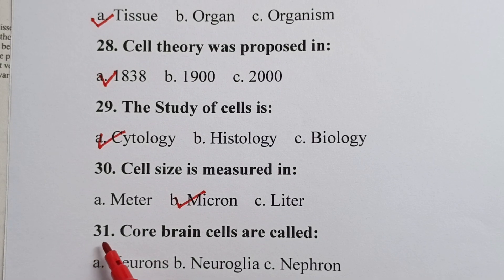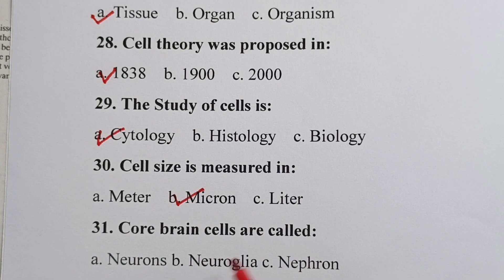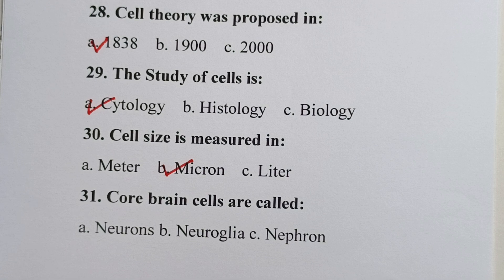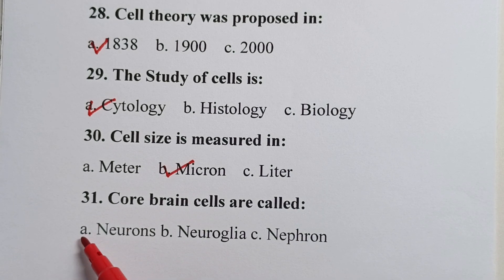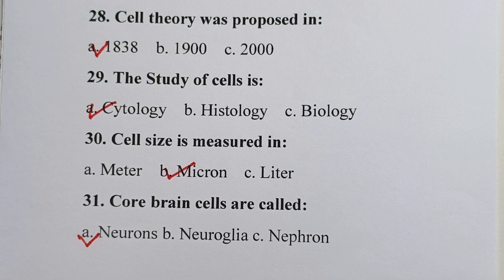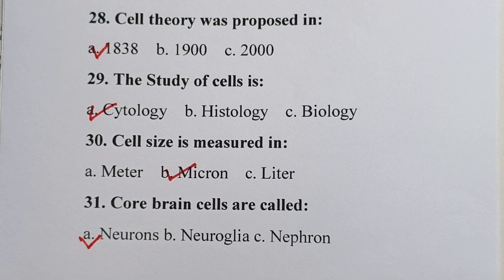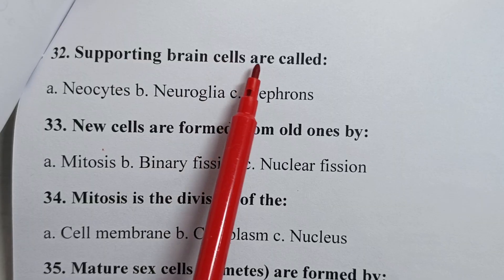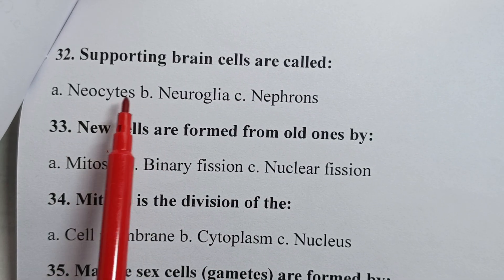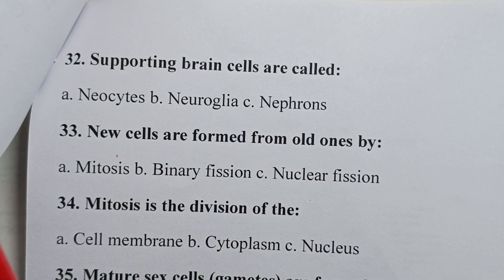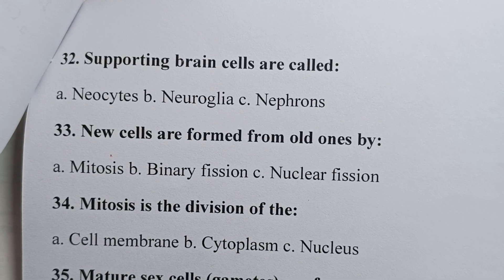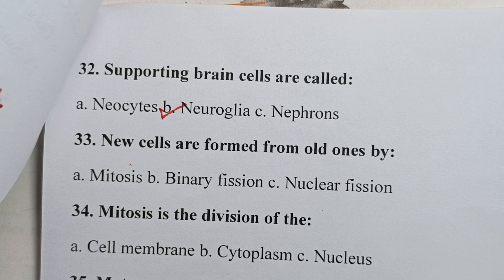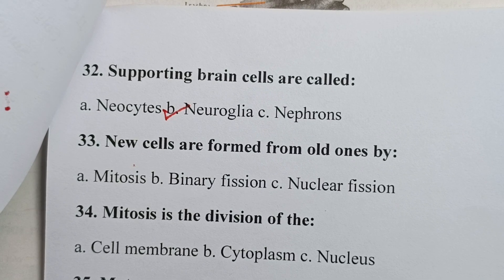Question thirty-one: core brain cells are called — is it neurons, neuroglia, or nephron? Question thirty-two: supporting brain cells are called — is it neocyte, neuroglia, or nephron? Your correct answer is neuroglia. The main cells in the brain are called neurons, while the supporting cells in the brain are called neuroglia.